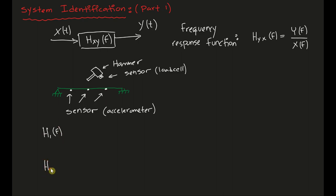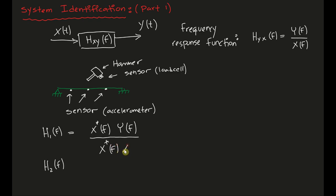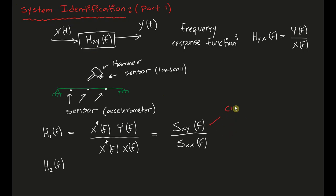Knowing what my inputs and outputs look like, I can do frequency response function analysis. There are two ways of doing this: H1 and H2. H1 has a numerator which is the cross spectral density — comparing the frequency domain manifestations of x and y — and a denominator which is the auto spectral density, taking the same signal in the frequency domain and multiplying it by itself. This is what H1 looks like.